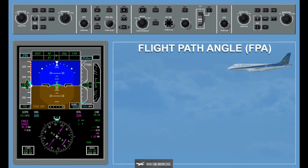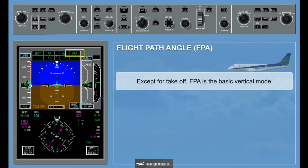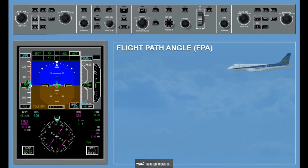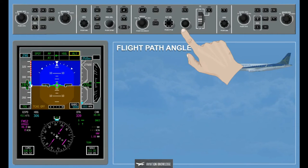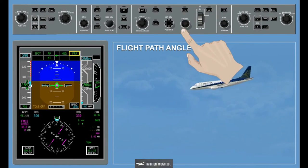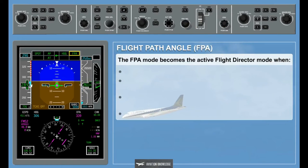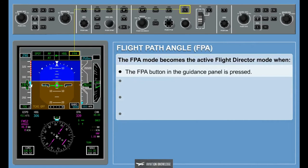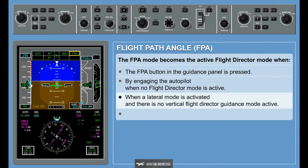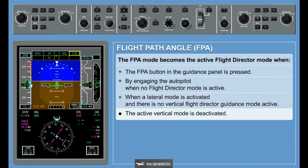Flight Path Angle, FPA: Except for takeoff, FPA is the basic vertical mode. When FPA is active, the flight path reference line is displayed. Pressing the FPR button in the display controller panel displays the flight path reference line regardless of the active vertical mode. The flight path angle can be selected via the FPA selector knob on the guidance panel. The flight path angle mode becomes the active flight director mode when the FPA button is pressed, by engaging the autopilot when no flight director mode is active, or when a lateral mode is activated and there is no vertical flight director guidance mode active.